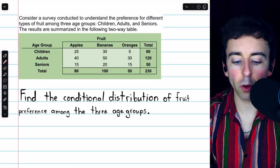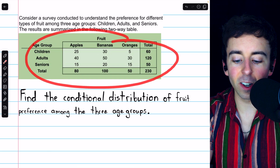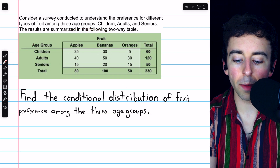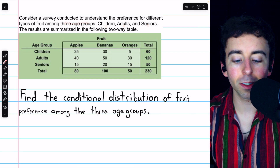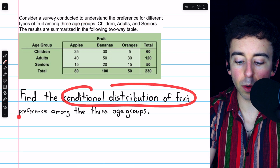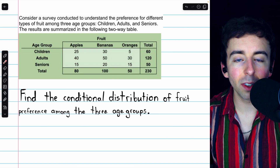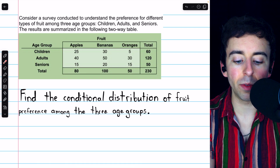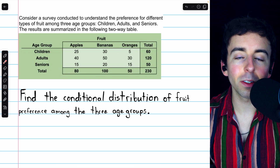Here's another example you can try to make sure you understand. We have the results of a survey conducted to understand the preference for different types of fruit among three age groups: children, adults, and seniors. We're asked to find the conditional distribution of fruit preference among the three age groups.